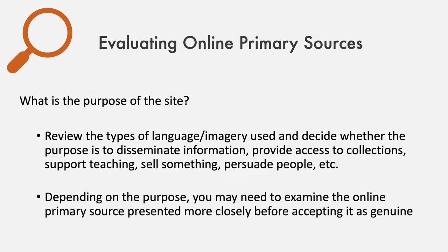To determine the purpose of the site, review the types of language and imagery used. Is the language and imagery designed to disseminate information, provide access to collections, support teaching, sell something, or to persuade people? Determining the purpose can help you assess the quality of the online primary sources being provided. If the purpose of the site is for propaganda or to somehow persuade you into something, then you should examine the online primary sources they present very closely before accepting them as genuine.